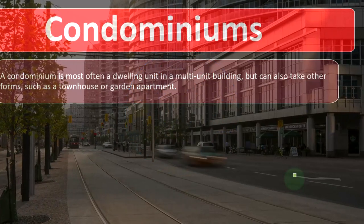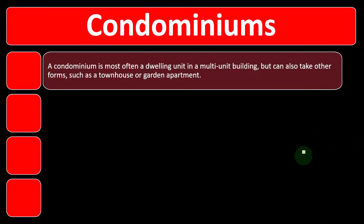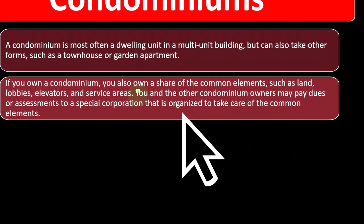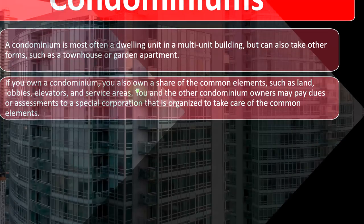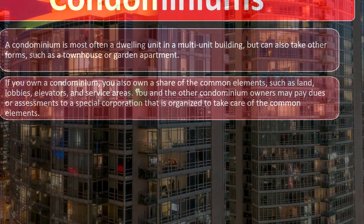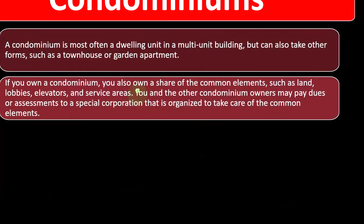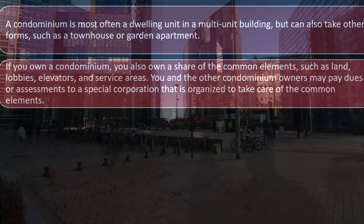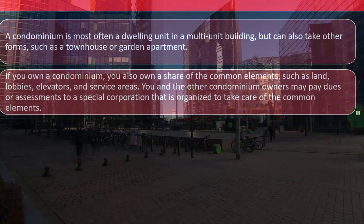A condominium is most often a dwelling unit in a multi-unit building, but can also take other forms such as a townhouse or garden apartment. You own the unit in the building — you're not renting it. If you own a condominium, you also own a share of the common elements such as land, lobbies, elevators, and service areas. These common areas are owned in part by all the condominium owners.